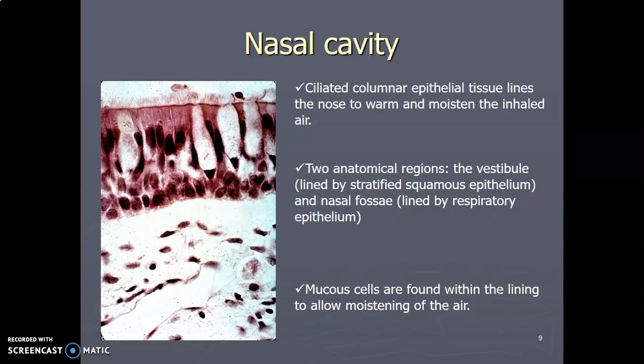We'll start with the nasal cavity. The nasal cavity is lined by pseudostratified columnar ciliated epithelium, and it has nasal turbinates that increase surface area, warming and moistening the inhaled air so it conditions the air. We have two regions of the nasal cavity: there's the vestibule that is lined by stratified squamous epithelium, and there is the nasal fossa that is lined by respiratory epithelium. This slide shows you the pseudostratified columnar ciliated epithelium with goblet cells — these are goblet cells, these are cilia — and you can see the nuclei are at different locations.